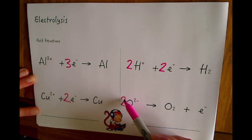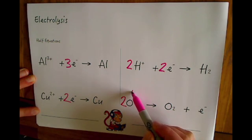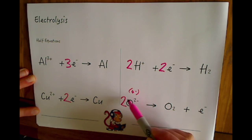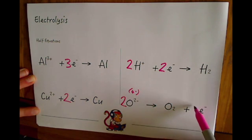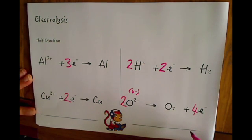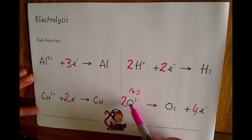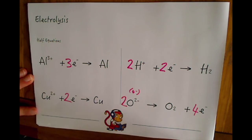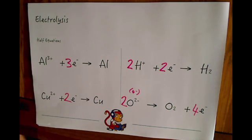And for the oxide ion here, again that turns into O2 so we will need two of those. And now we've got two lots of 2- so over here we've got 4- in total because two lots of 2- makes 4- so we are going to need four electrons. So when O2- turns into oxygen it gives away four electrons. Very well done if you've got those correct.